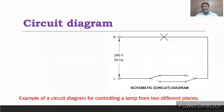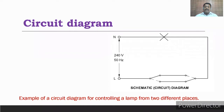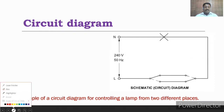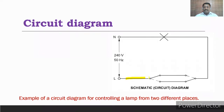If the circuit diagram is correct, the diagram is correct. If you have a lamp in two different places, you can have a lamp. If you have a lamp in two different places, you can place a lamp accordingly.